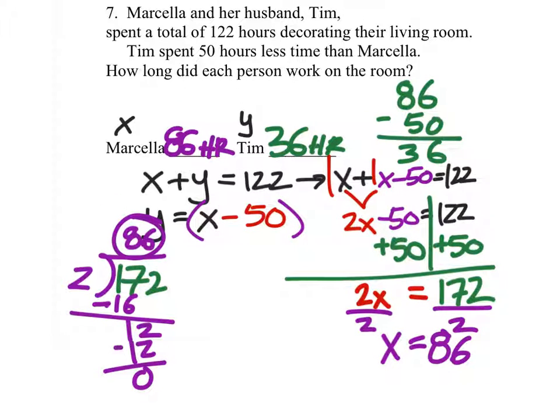Did everyone hear that? So, since we know that they worked 122 hours, and we know, after we found Marcella's, that she worked 86, 122 minus the 86 also gives us the 36. That's great.